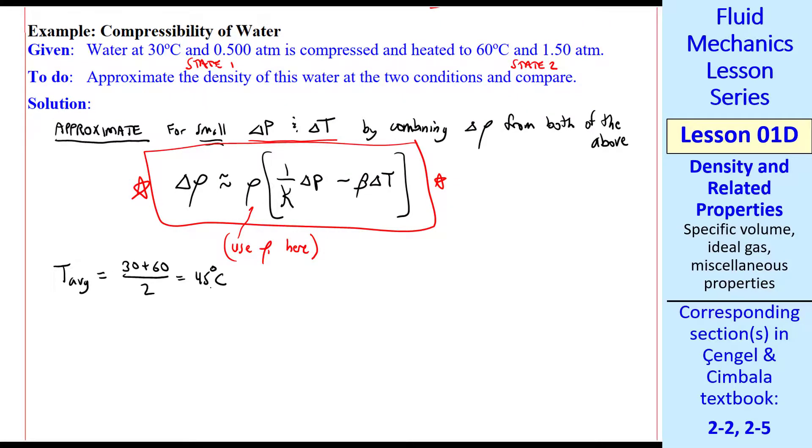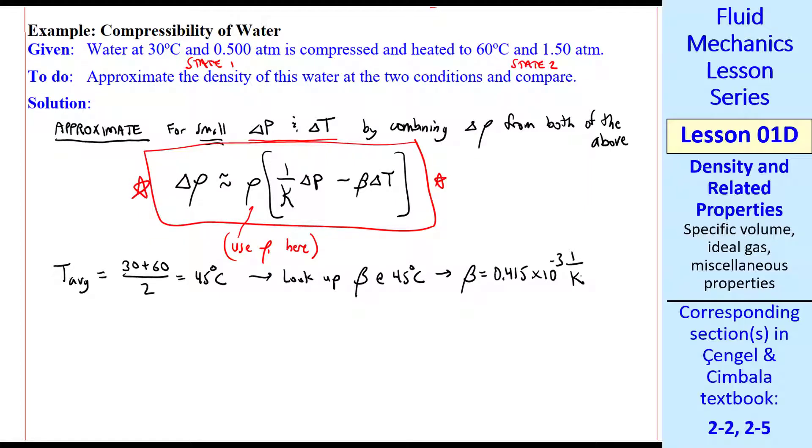Let's calculate the average temperature. We get 45 degrees C. For water, we look up beta at 45 degrees C. Beta is 0.415 times 10 to the minus 3, 1 over K. We're going to use this as a constant even though we know that beta changes with temperature. That's our approximation.